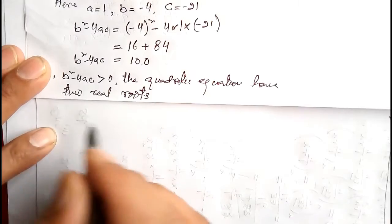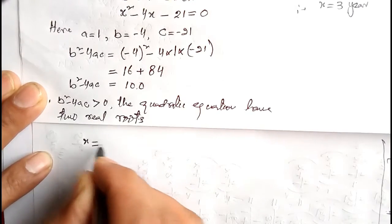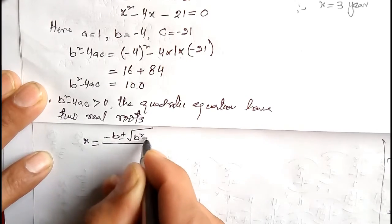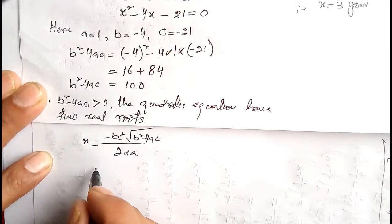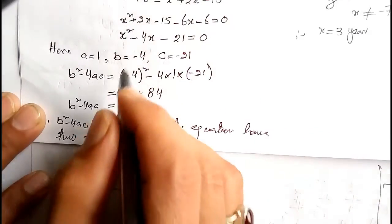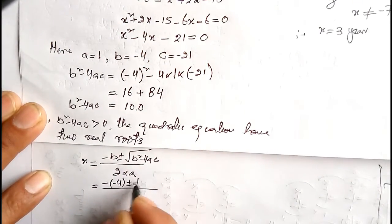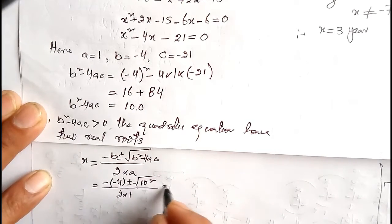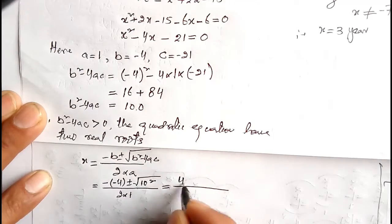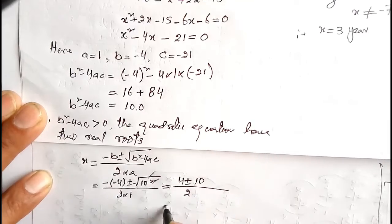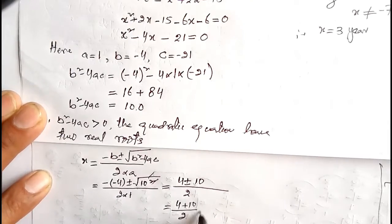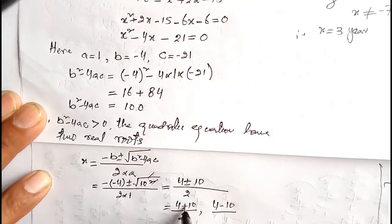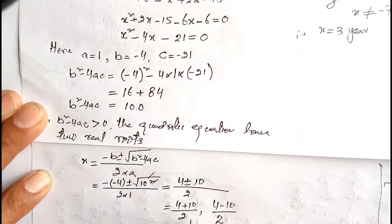So now we will find the two real roots using: x = [minus b ± √(b² - 4ac)] / (2a). Substituting: x = [minus(minus 4) ± √100] / (2×1) = [4 ± 10] / 2. This gives us two roots: x = (4 + 10)/2 = 14/2 = 7, and x = (4 minus 10)/2 = minus 6/2 = minus 3.